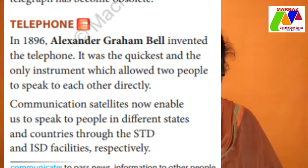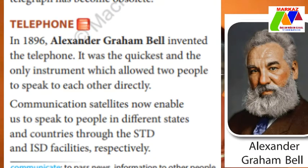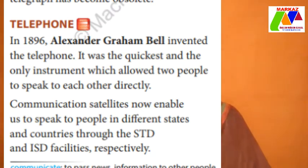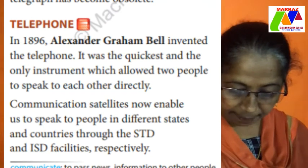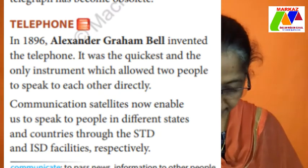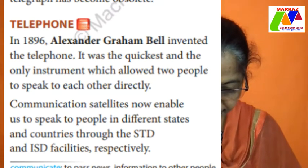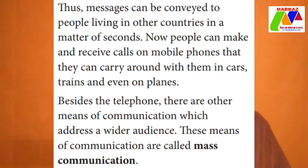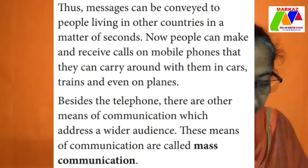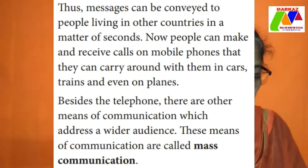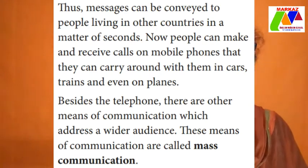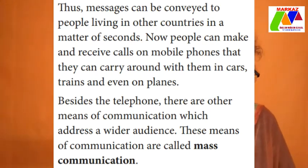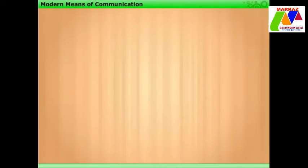In 1896, Alexander Graham Bell invented the telephone. It was the quickest instrument which allows two people to speak to each other directly. Communication satellites now enable us to speak to people in different states and countries through the STD and ISD facilities respectively. Thus messages can be conveyed to people in other countries in a matter of seconds. Now people can make and receive calls on mobile phones they carry in cars, trains, and even on planes. Besides the telephone, there are other means of communication addressing a wider audience, called mass communication.